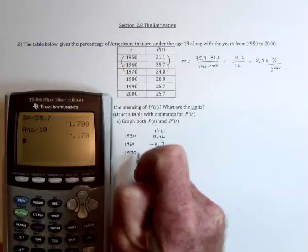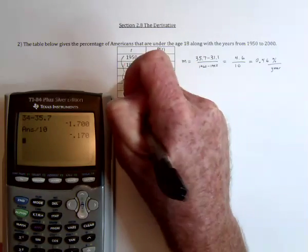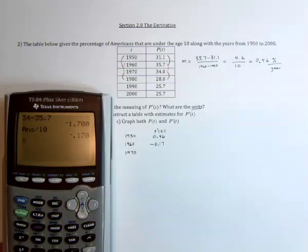Next, the 1970s. So that would be these two, from the 70s to the 80s. So 28 minus 34, and then I hit something wrong. 28 minus 34, and then divide that by 10.